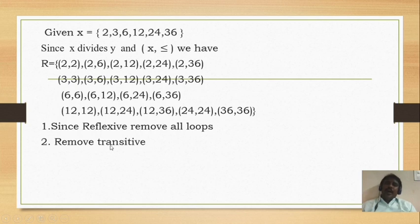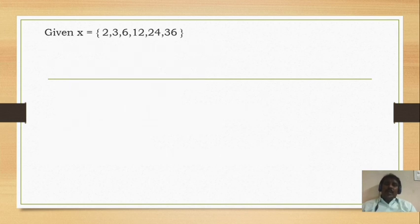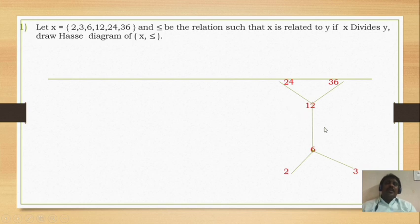Next, remove the transitivity. We have to remove all the transitive edges — because it is a poset (reflexive, anti-symmetric, and transitive). We check each element and remove the transitive edges. Remove all the arrows. Then we get the Hasse diagram. So the Hasse diagram looks like this: 2 and 3 at the bottom, then 2 divides 6 and 3 divides 6, then 6 divides 12, then 12 divides 24 and 12 divides 36. This is the Hasse diagram for the given problem.